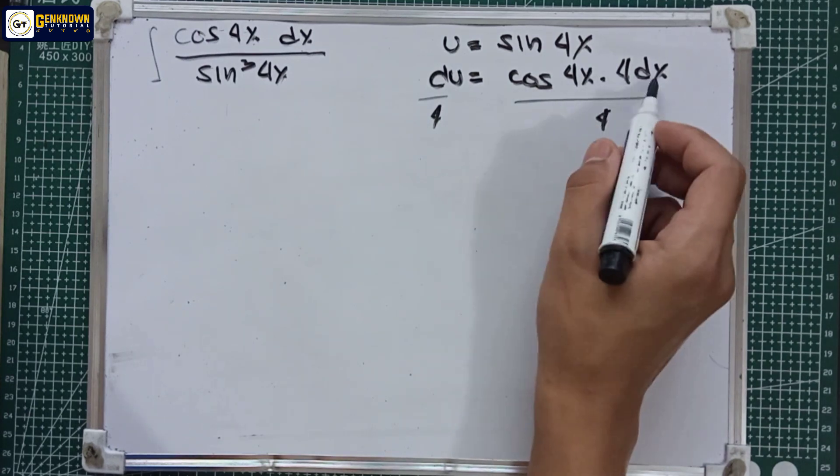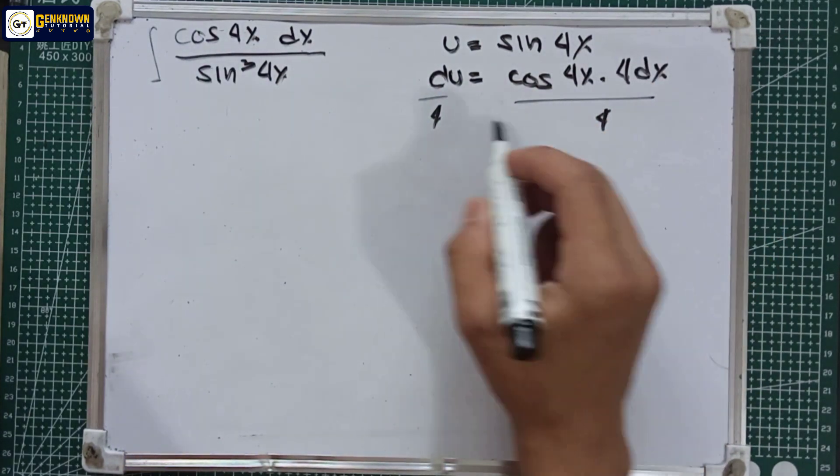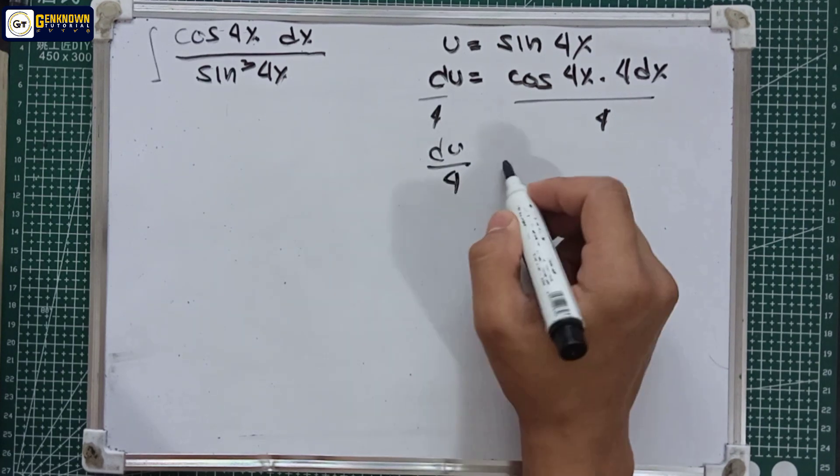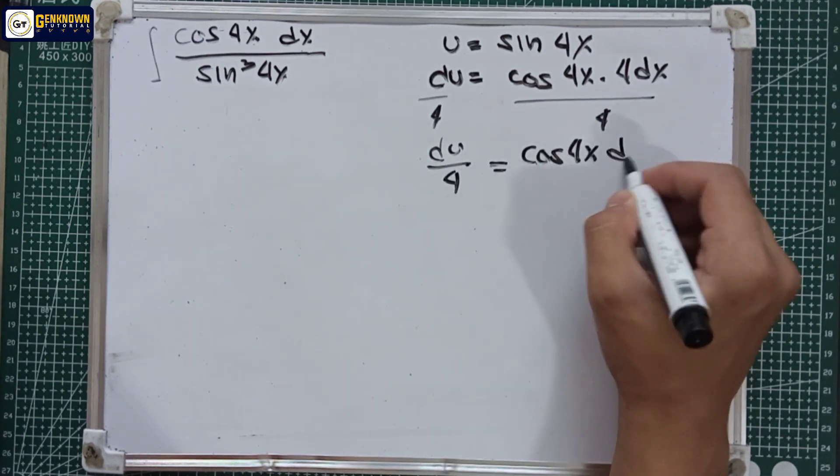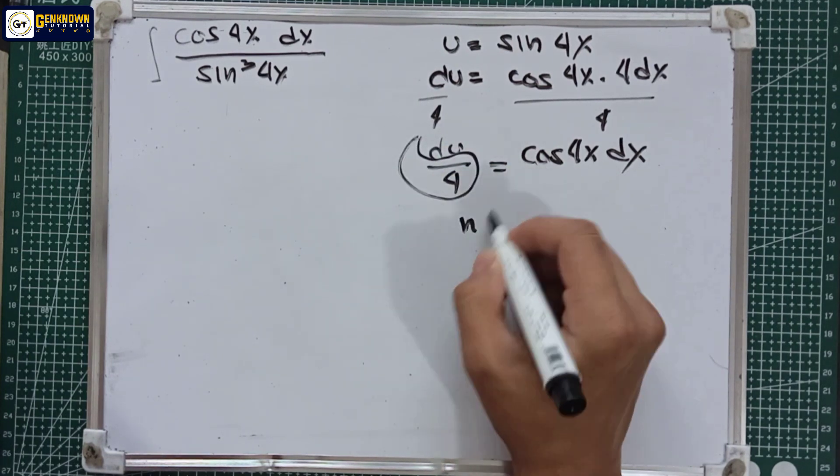Since cosine 4x dx is in the numerator, we divide by 4 to cancel it out. So du over 4 equals cosine 4x dx. The neutralizing factor is one-fourth.